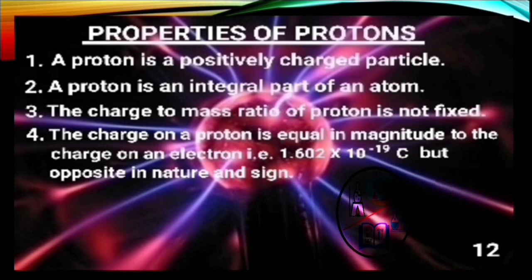The charge on a proton is equal in magnitude to the charge on an electron. That is, 1.602 into 10 to the power minus 19 coulomb. But opposite in nature and sign. Which means, the charge on an electron is found to be minus 1.602 into 10 to the power minus 19 coulomb. And that of proton is plus 1.602 into 10 to the power minus 19 coulomb.